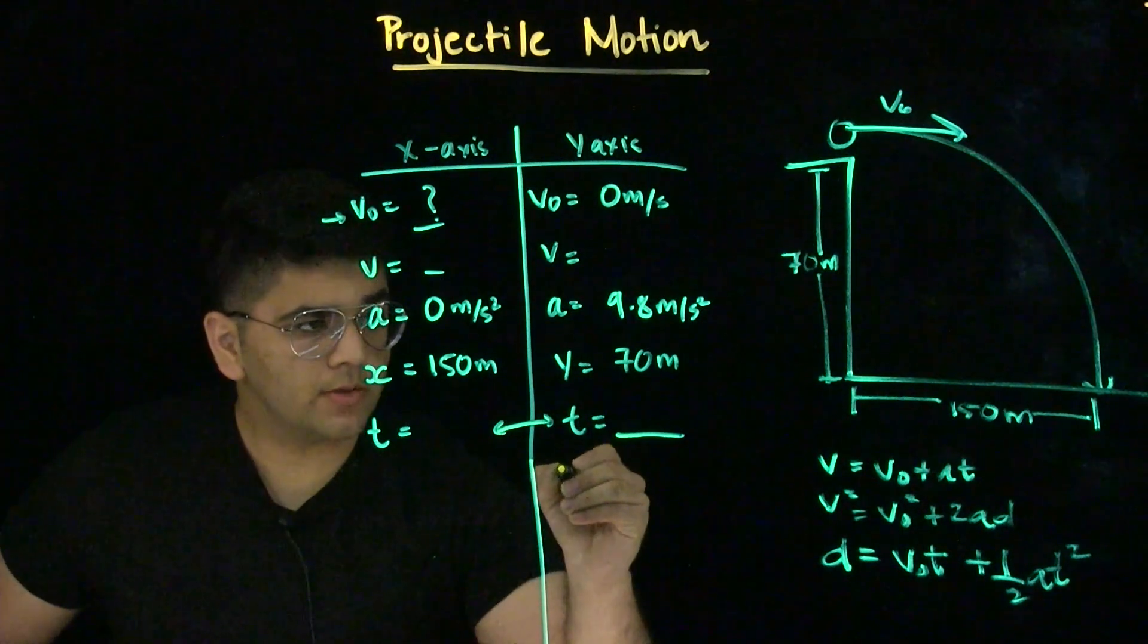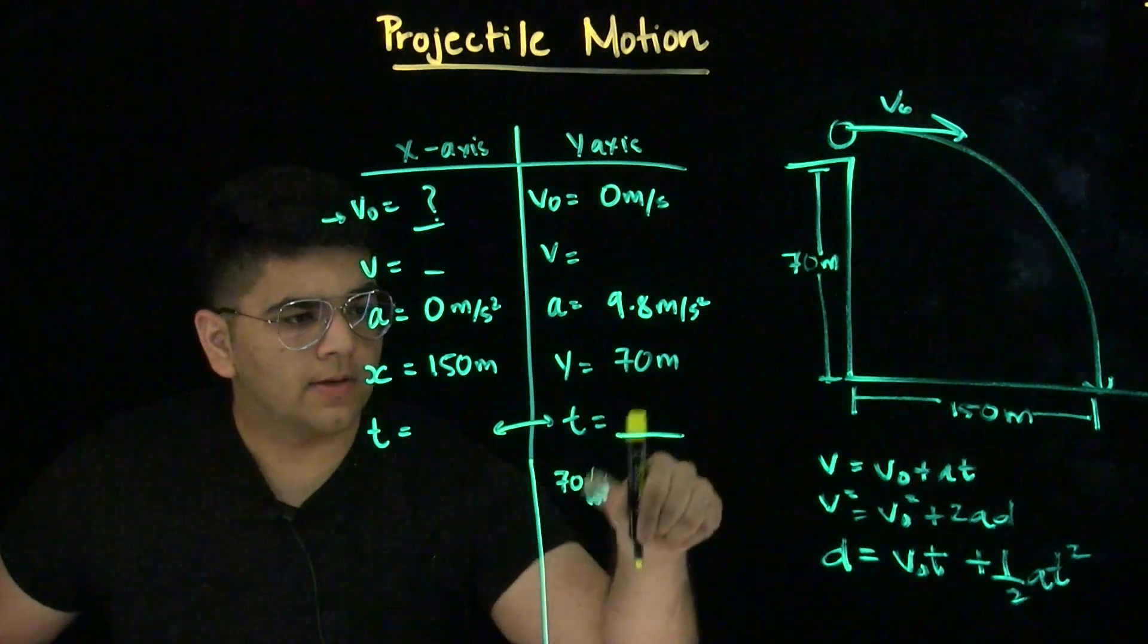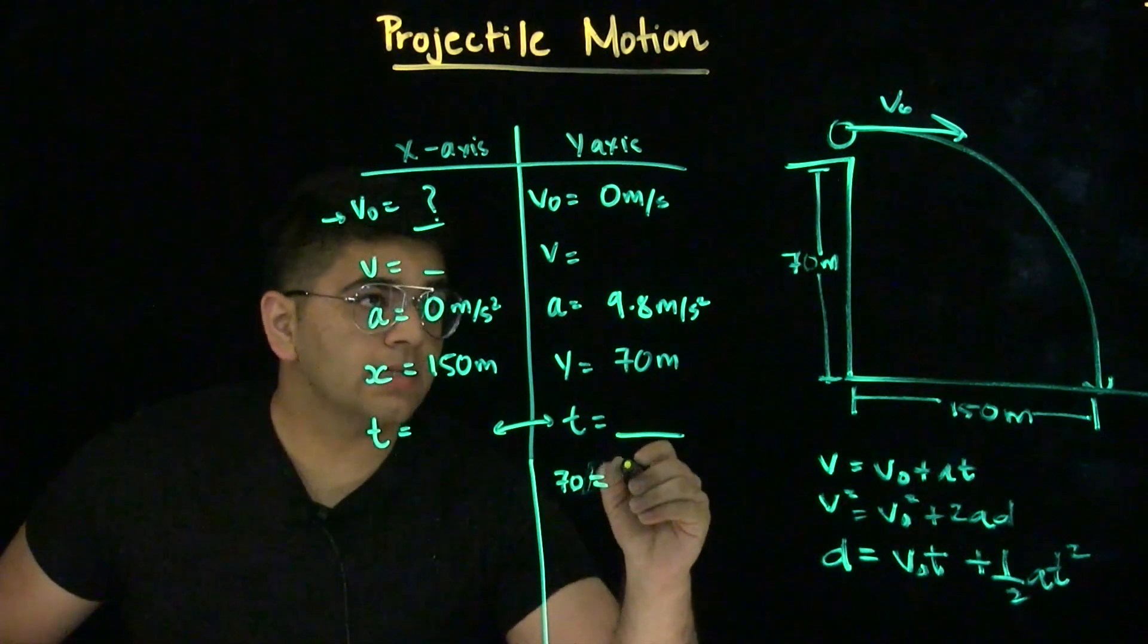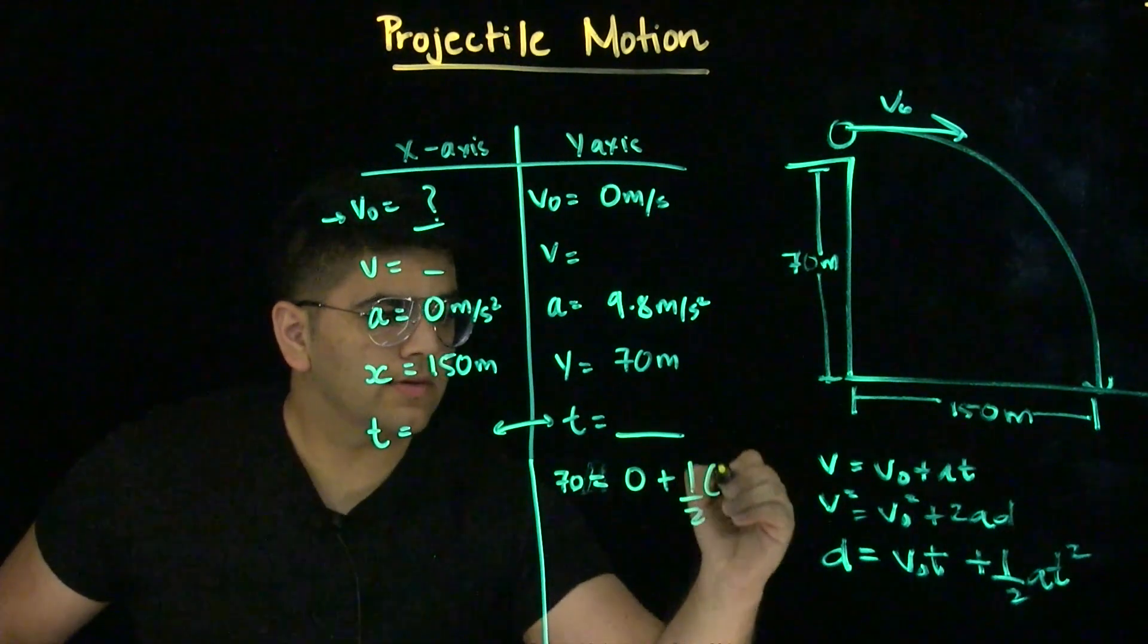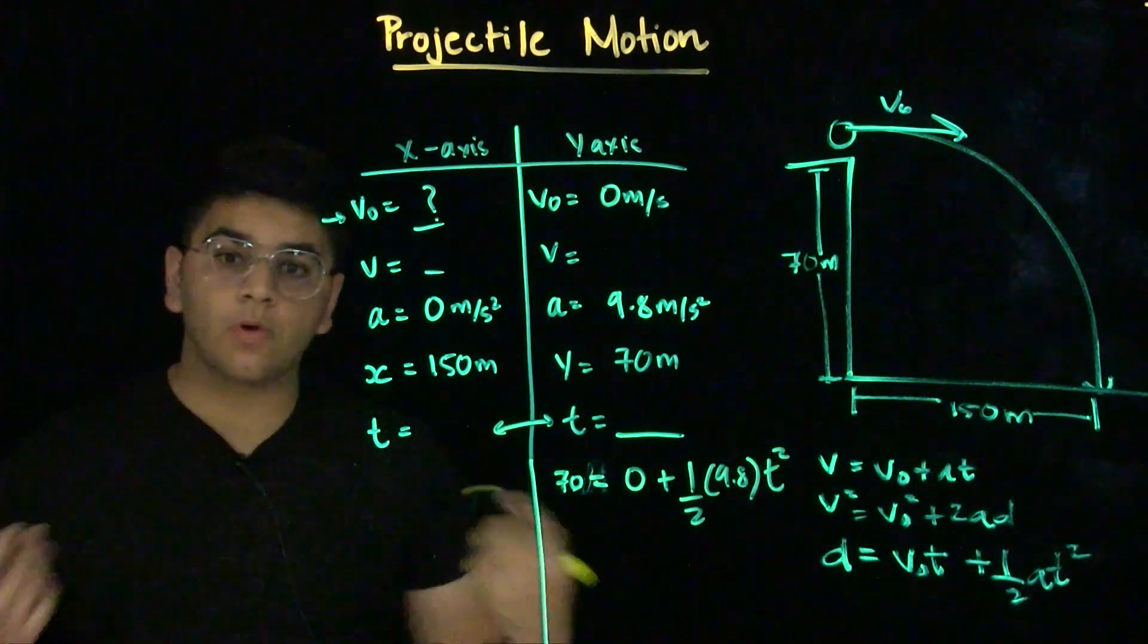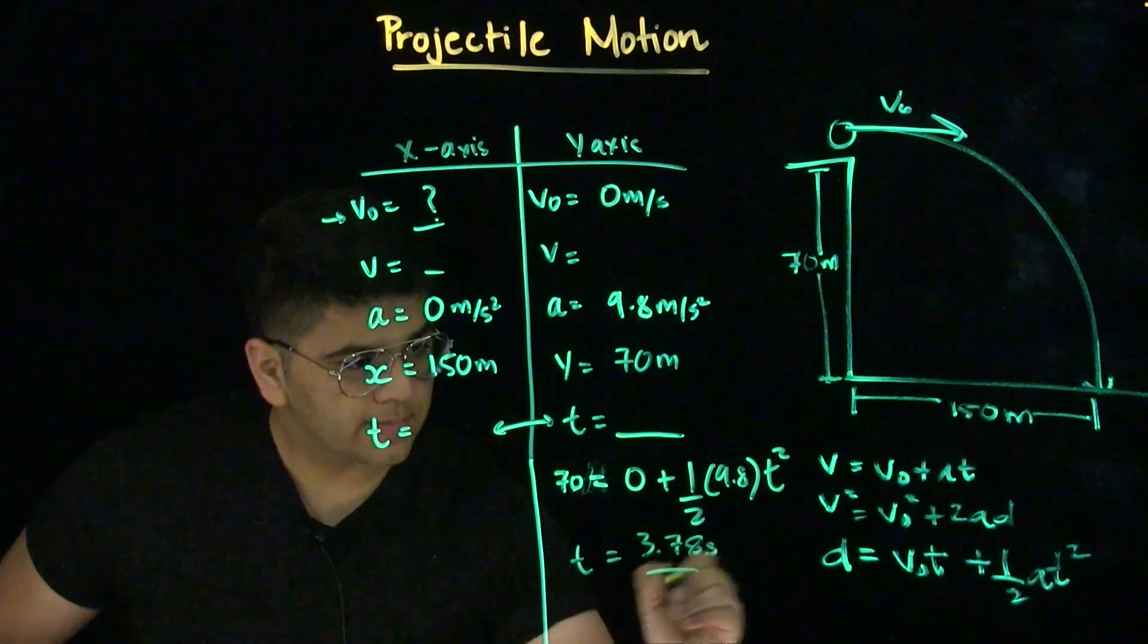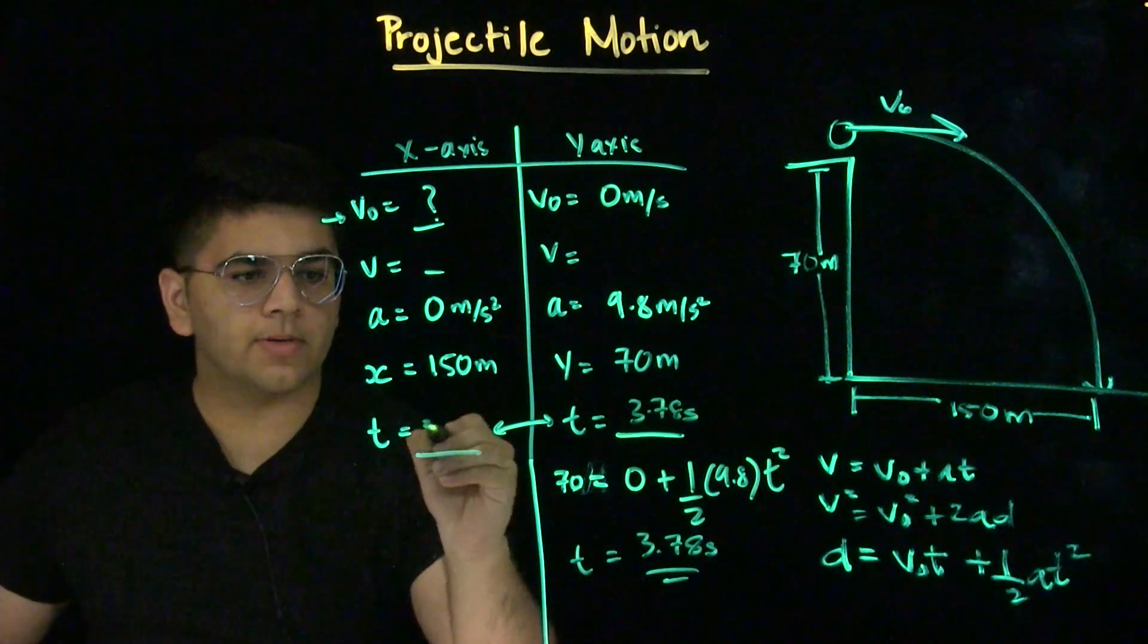We know displacement is 70 meters in the y-axis. We know initial velocity is 0, so our first term will be 0, plus 1 half times 9.8 times the time squared. Now, all we must do is solve for time. When we do that, we get time is 3.78 seconds, which we can use on both sides of the axes.